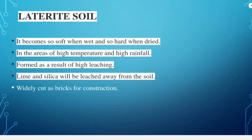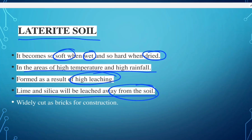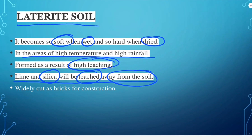Next is laterite soil. The soil becomes soft when wet and hard when dried. In areas of high temperature and high rainfall, it is formed as a result of high leaching under specific monsoon conditions. Leaching of soil accelerates and silica is leached away from the soil, reducing the silica content of rocks and soils. Laterite soils are widely cut as bricks for use in house construction.